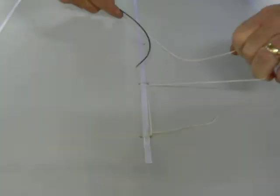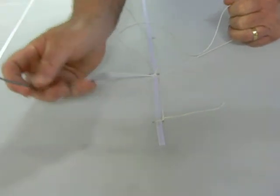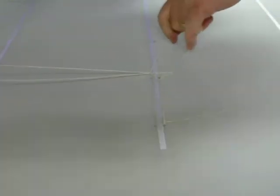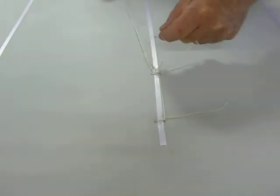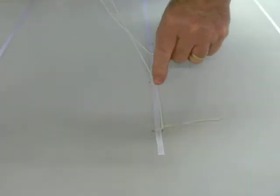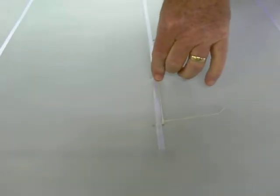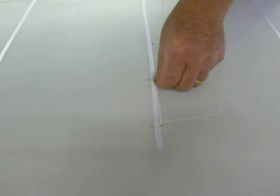Then behind, under that one, and then through the loop. Put some tension on it. Under on the hole, work it down snug.